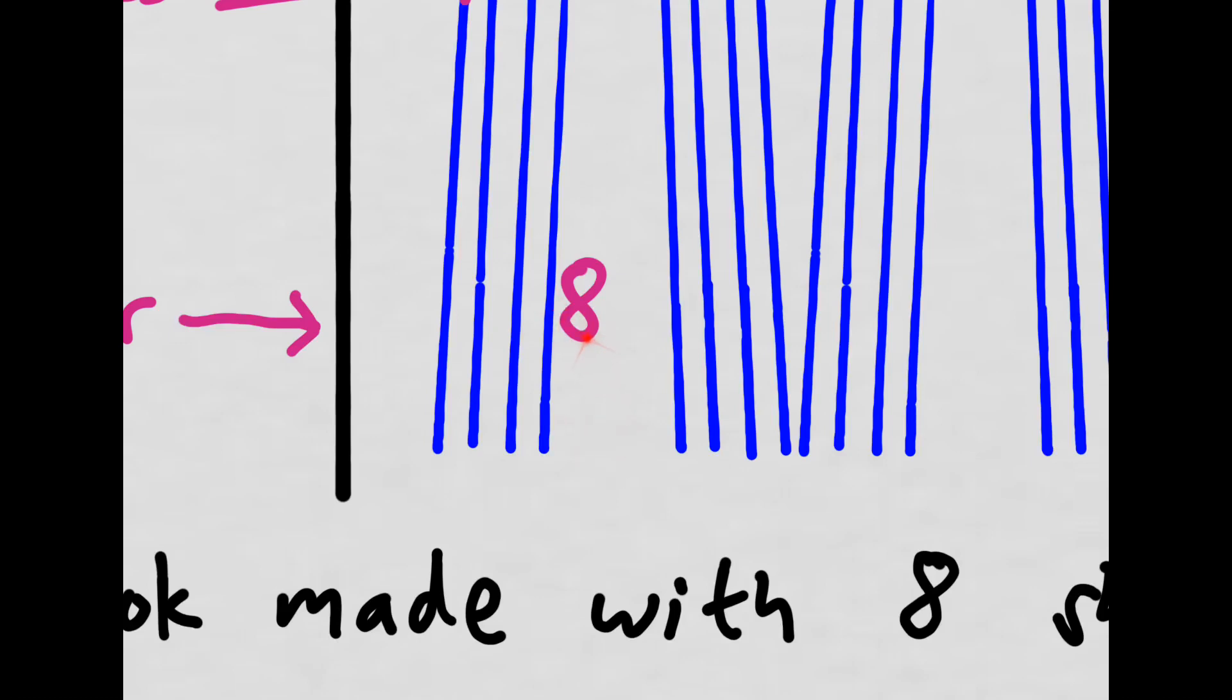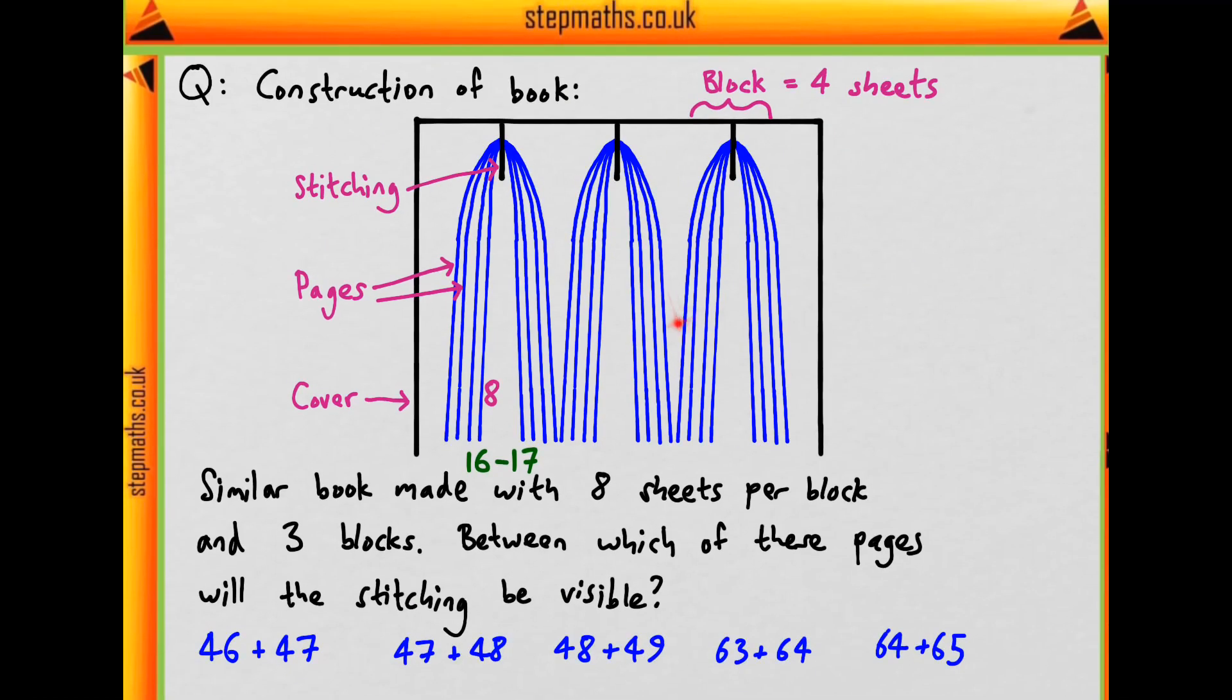Then what would this page be in the eight sheet equivalent? And so we know this whole thing is going to be doubled, so we'll be on page 16, and therefore this gap corresponds to page 16 to 17. Is this one of our options? No. So let's go to the next gap.